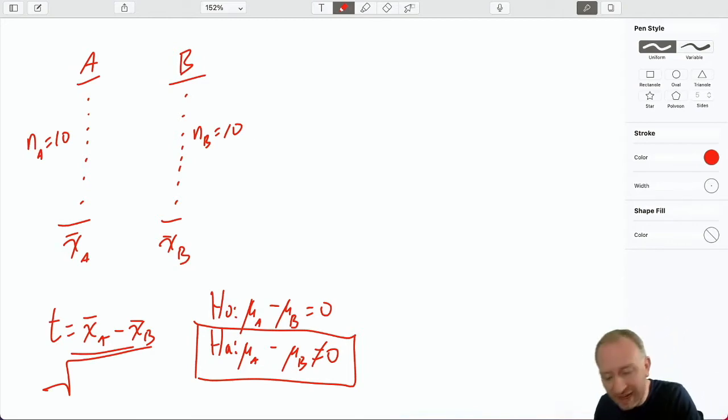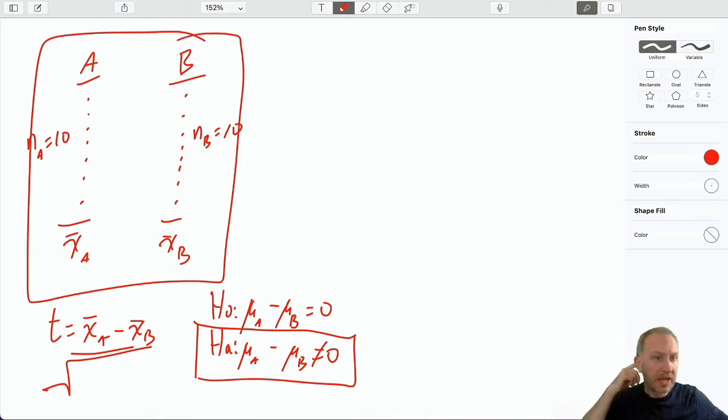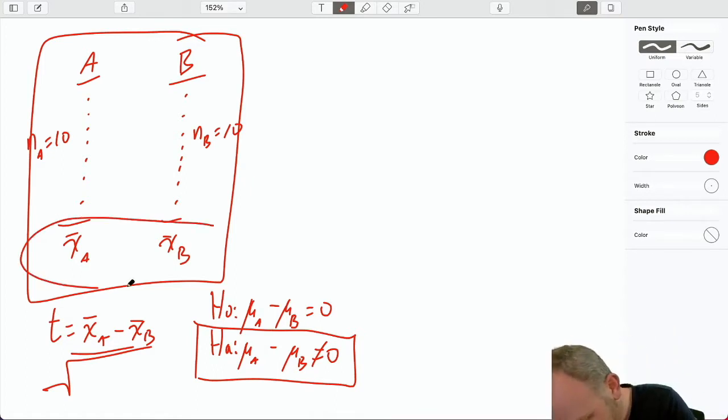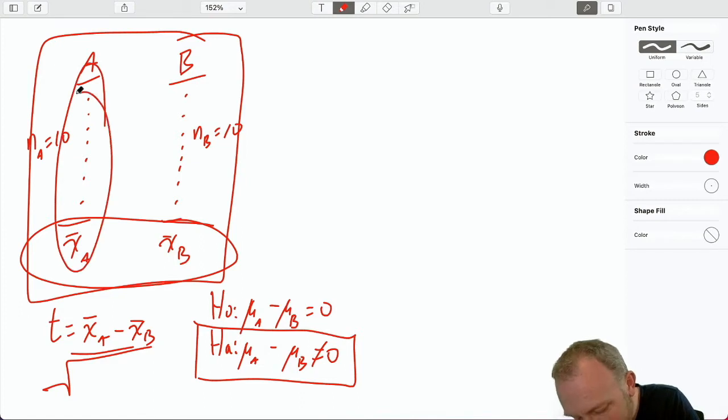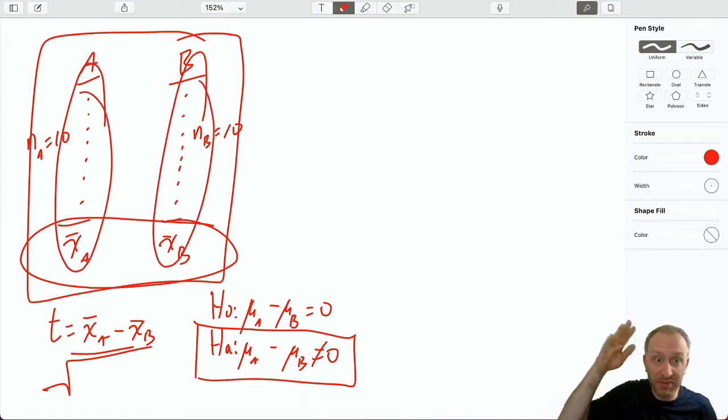When we have these two independent samples, we can think of maybe three different sources of variation, three different sources of static. One of them is variation that exists between those two samples. In a t-test, we're testing to see whether that source of noise is statistically significant. There's some variation within each of those samples, random variation from the sample means within each. That's another source of static, another source of noise.